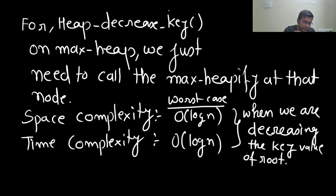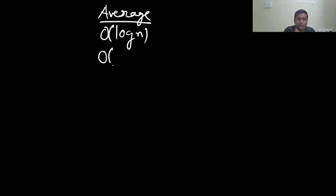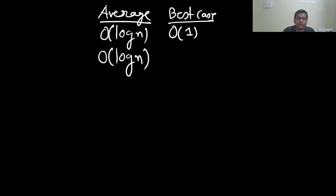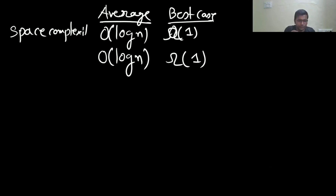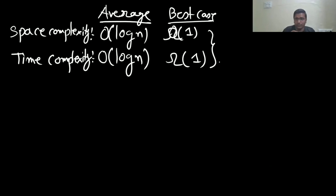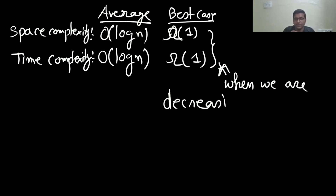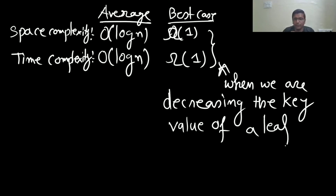In the worst case, we decrease the key value of the root. The average case is also O(log n). For the best case: when we are decreasing a leaf node's key value, max-heapify does nothing, giving Ω(1). So the best case is Ω(1), worst and average case are both O(log n) for heap-decrease-key.